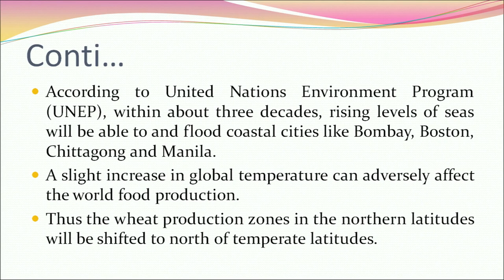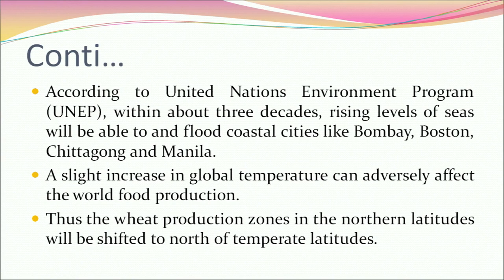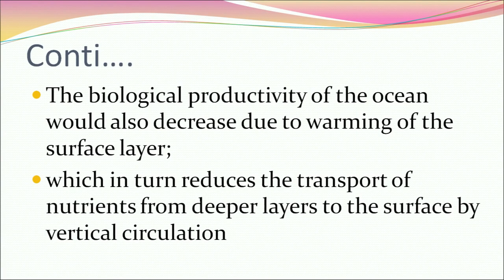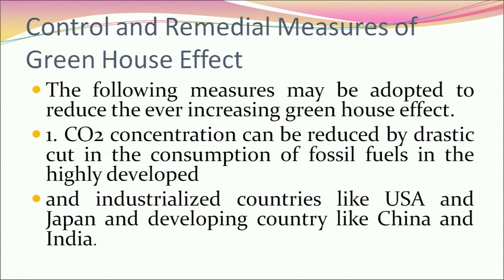According to the United Nations Environment Programme (UNEP), within about three decades rising sea levels will flood coastal cities like Bombay, Boston, Chittagong, and Manila. A slight increase in global temperature can adversely affect world food production — wheat production zones in northern latitudes will shift further north. The biological productivity of oceans would also decrease due to warming of the surface layer, which reduces the transport of nutrients from deeper layers to the surface.